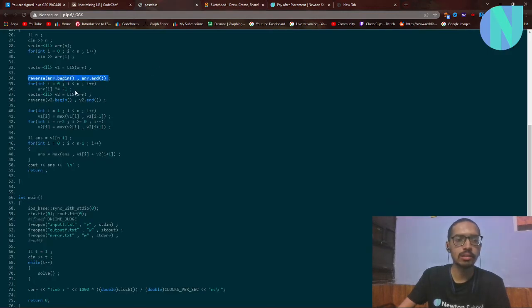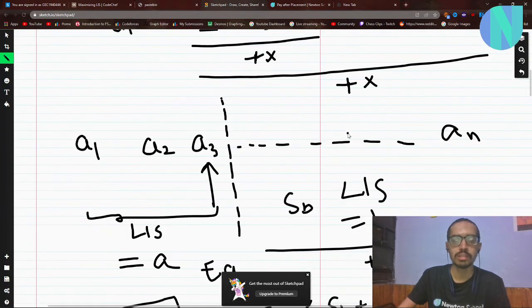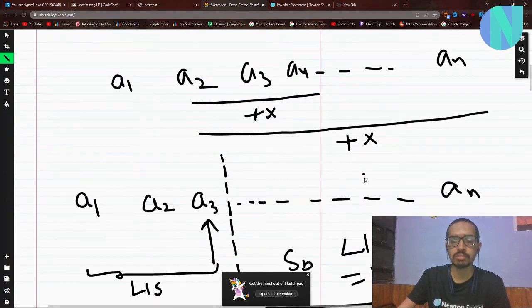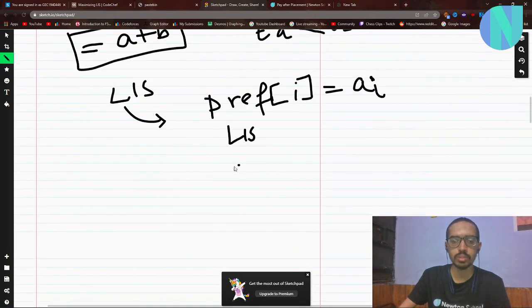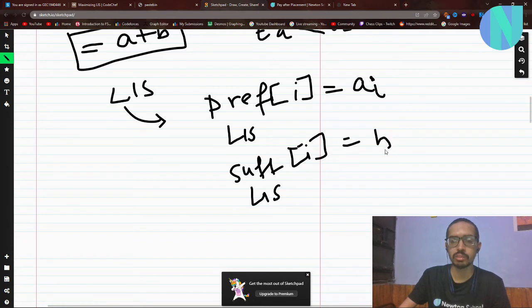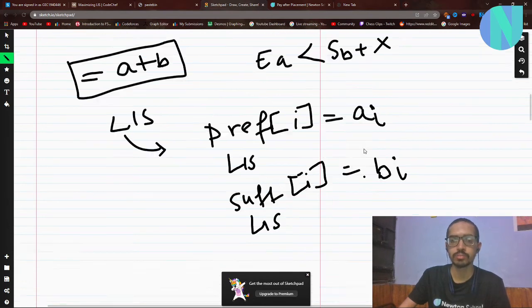Then they reversed the array, multiplied it by minus 1, and calculated its LIS. This way they can calculate the suffix LIS. This is basically suffix LIS, which equals b of i.